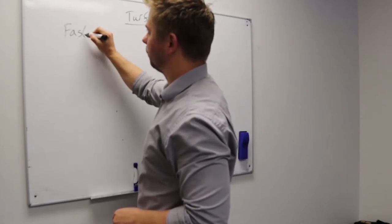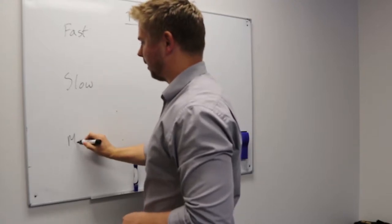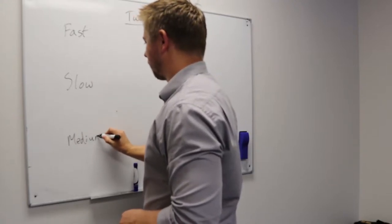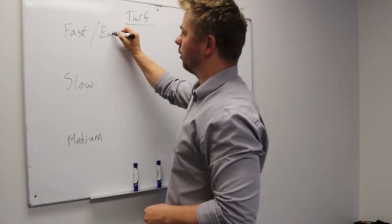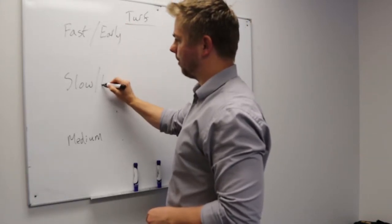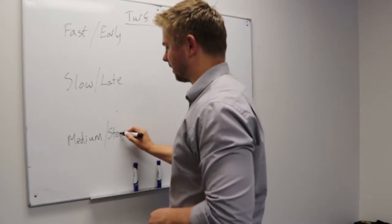Now we have three different types of turf. We have fast turf, we have slow turf, and we have medium turf. Different names for these: a fast turf can also be known as an early turf, a slow turf can be known as a late turf, and the medium turf is known as just a steady turf.